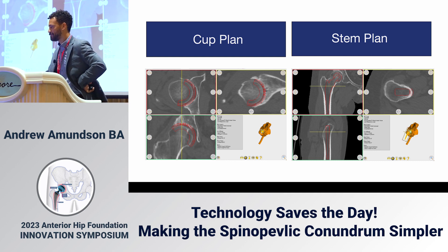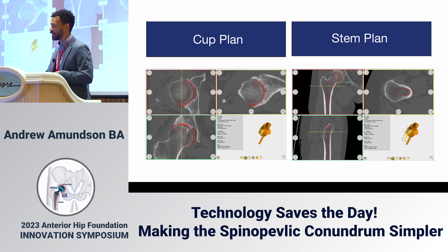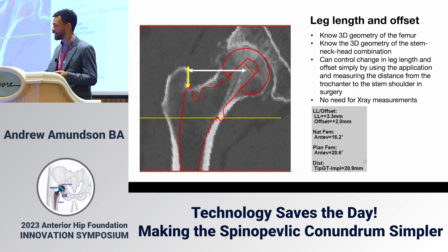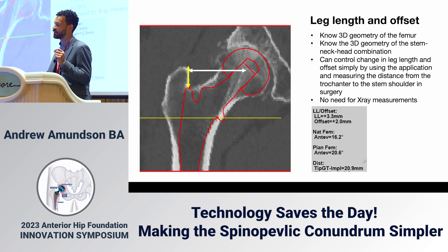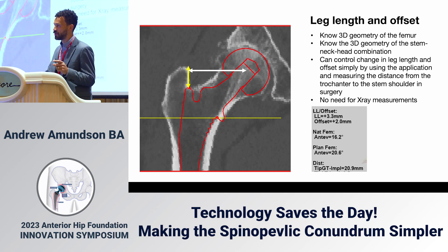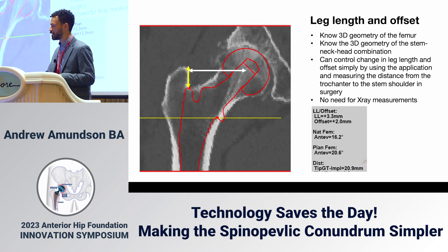The cup plan and stem plan allow you to adjust component sizing and positioning. For leg length and offset, since we know the 3D geometry of the implant, we landmark the tip of the greater trochanter or the saddle of the femur, and each implant has a landmark on the lateral shoulder. The software gives you the distance between those two points in the preoperative plan, and you can measure against that in surgery to confirm you're meeting the planned leg length and offset change.